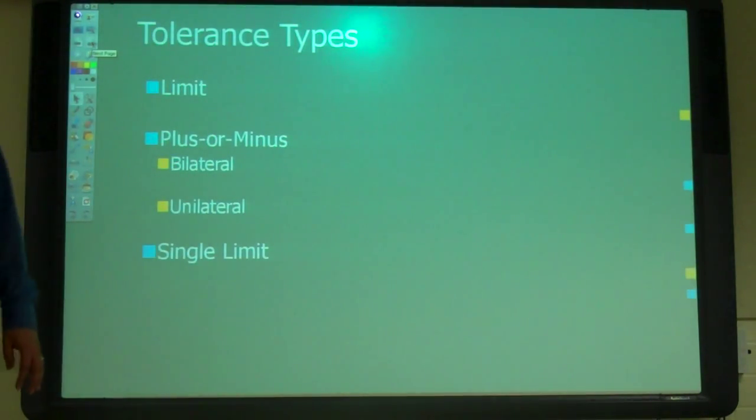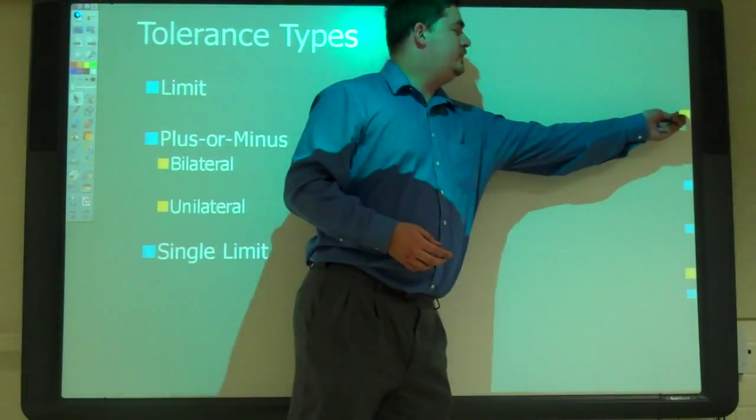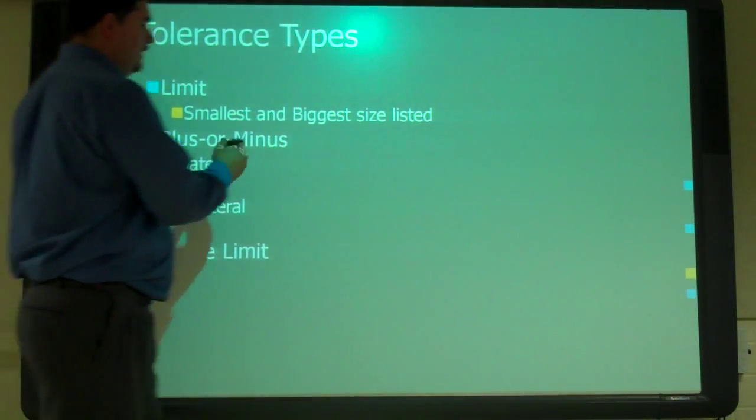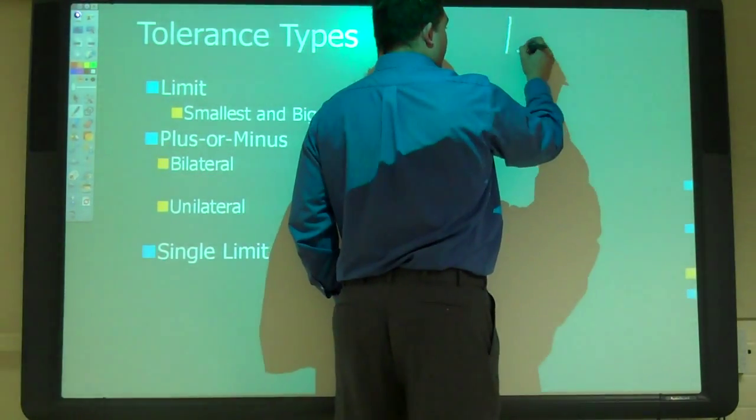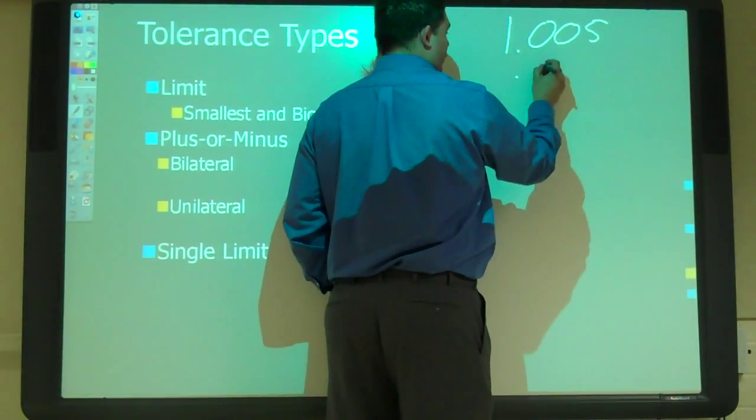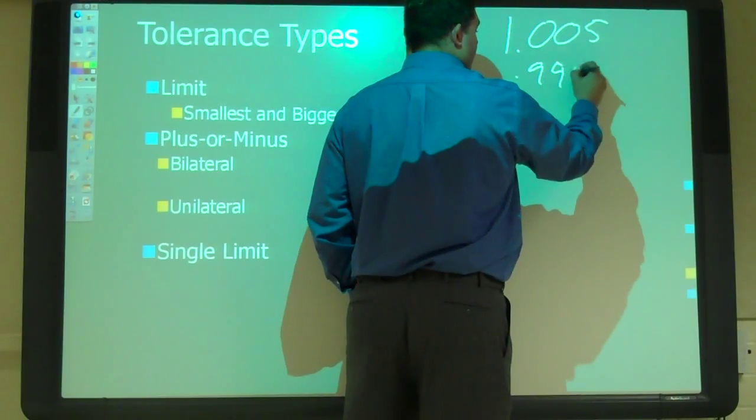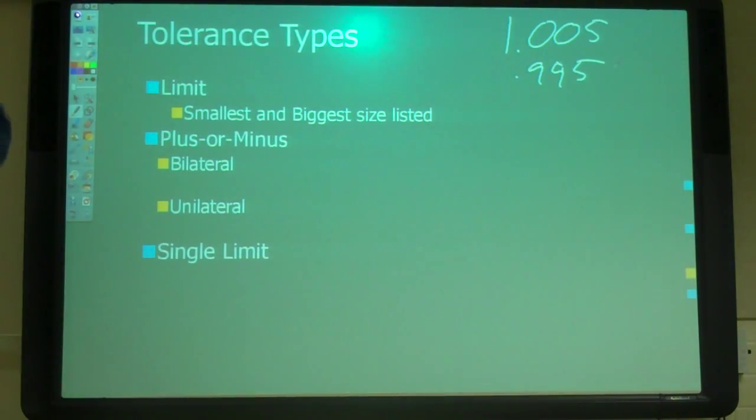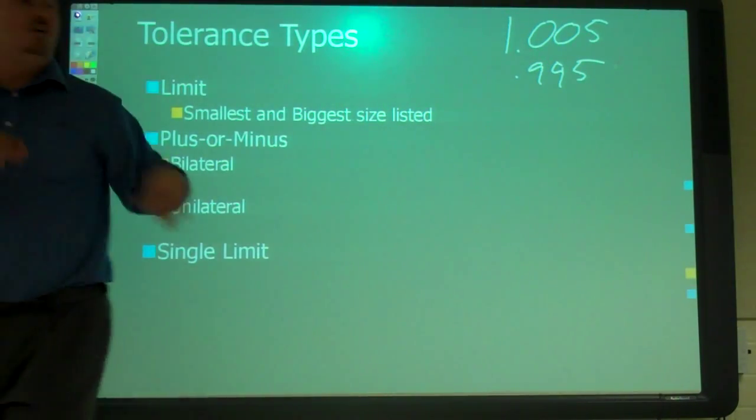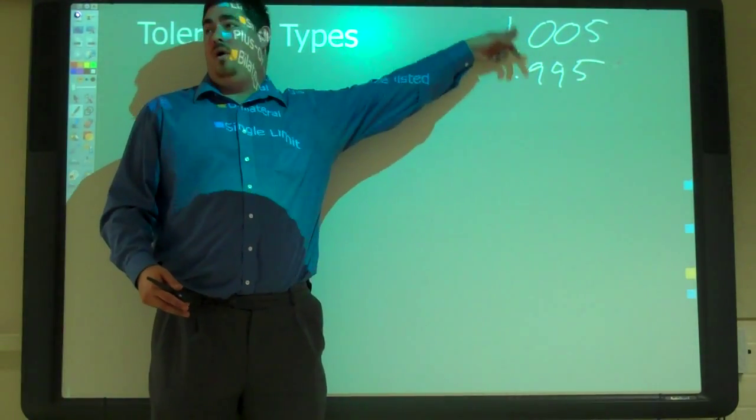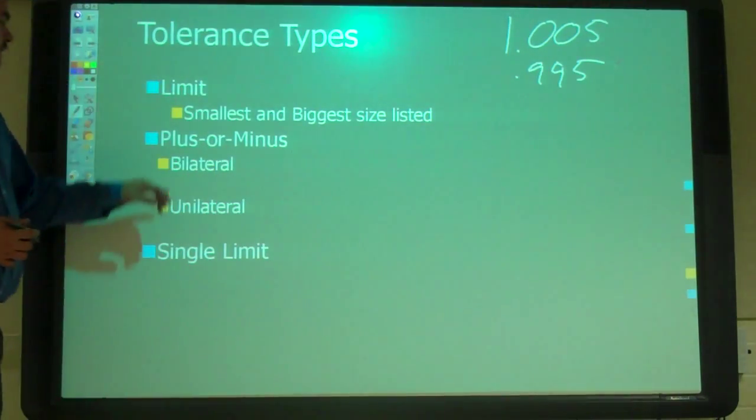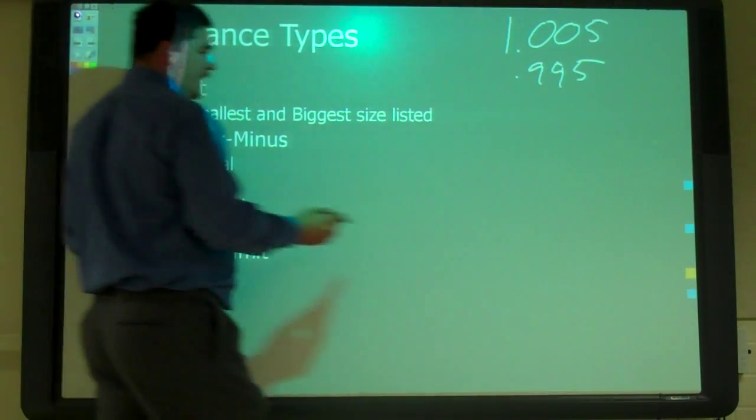All right. So we have a few different types of tolerances. We have limits tolerances where we specify the smallest and biggest number. So we just did that. So we did 1.005, 0.995. If we just put that on the drawing, that would be a limits tolerance. We're just giving them the range and we don't really care where it is in between them.